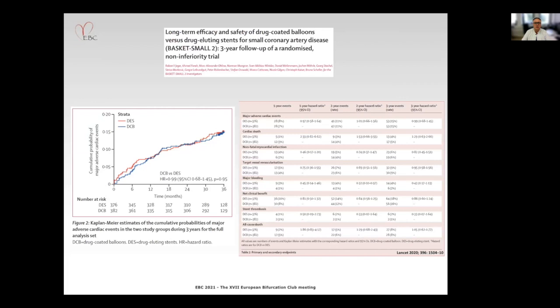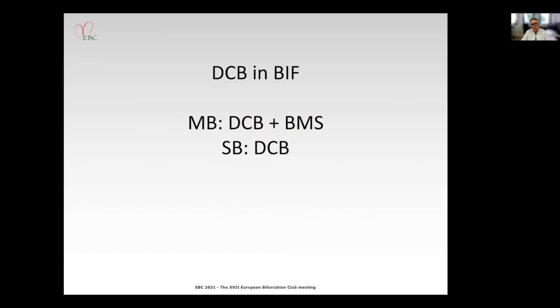The largest randomized trial so far is the BASKET-SMALL 2 trial — 758 patients randomized to either DCB only or contemporary drug-eluting stents in coronary arteries up to three millimeter diameter. And as you can see, MACE overall was no difference up to three years with the two concepts.